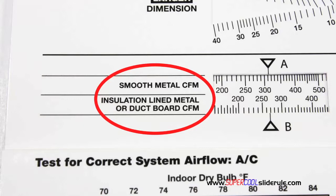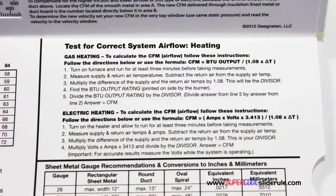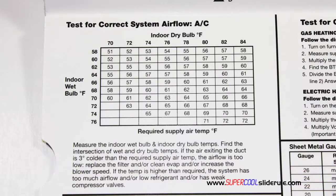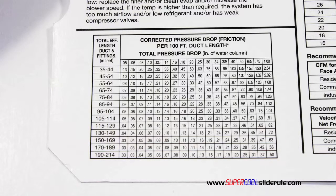The majority of technicians have never been taught that if the insulation is on the inside of the ductwork, you cannot size it with a regular duct calculator. It has step-by-step directions for determining airflow through a gas furnace, electric furnace, or an air conditioning unit, as well as pressure drop multipliers for ductwork and recommended velocities.